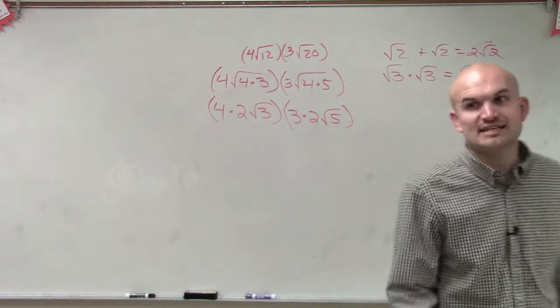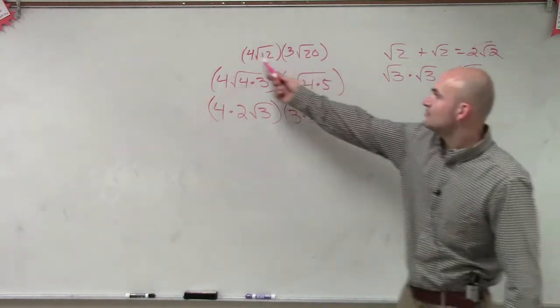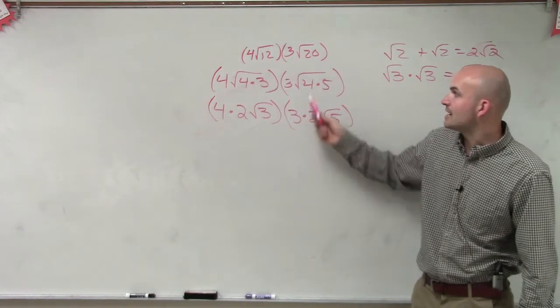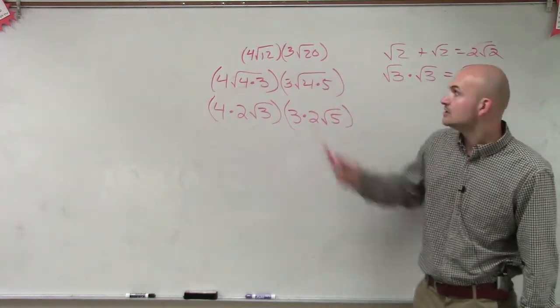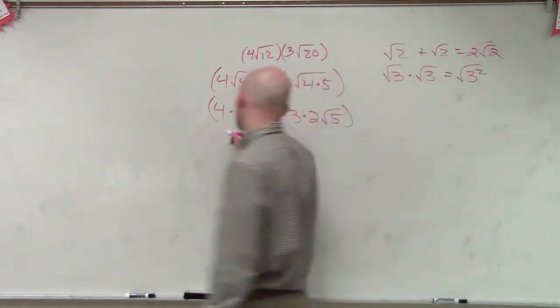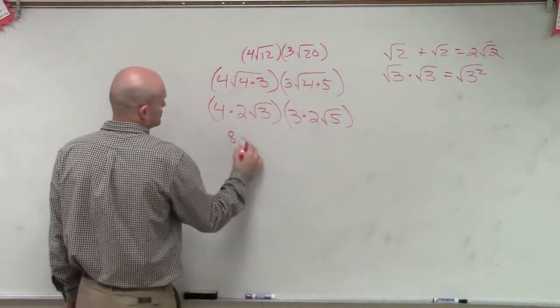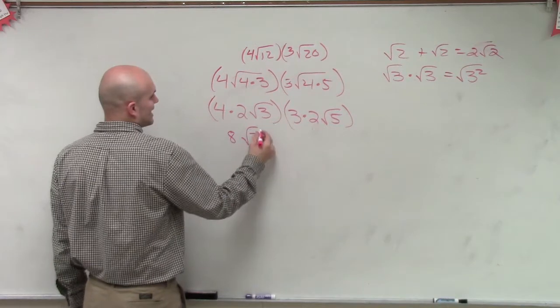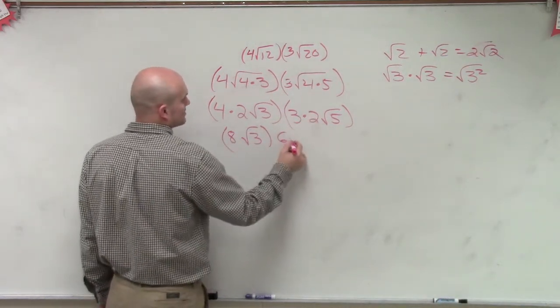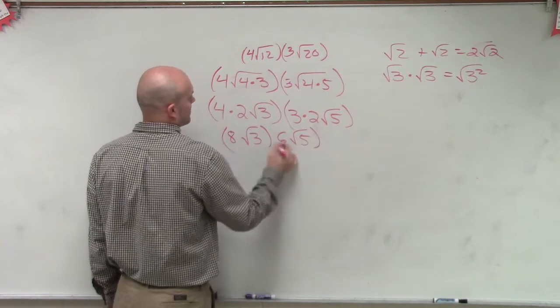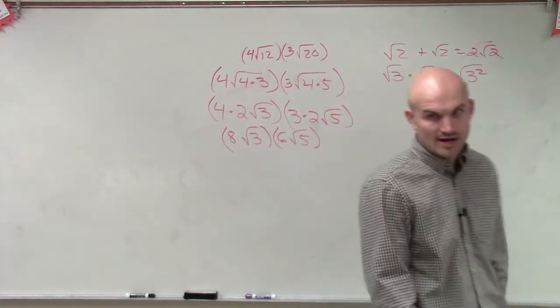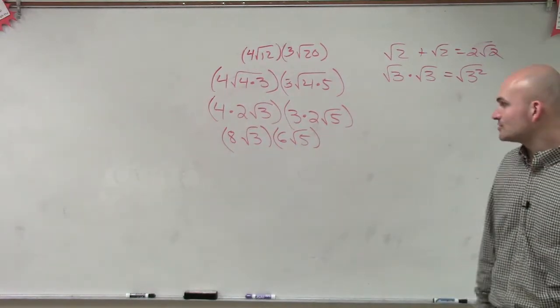Notice how I'm still multiplying by the 4 and the 3. It's still 4 times 2 and 3 times that 2, which is right there. So I'm still multiplying by this 4 and 3. So therefore, 4 times 2 is 8 square root of 3 times 6 square root of 5. So now we have it simplified, right? Now we simplified our radicals as much as possible.